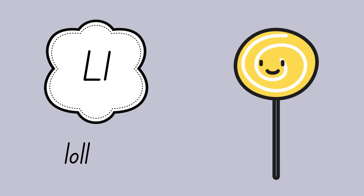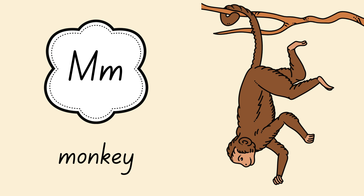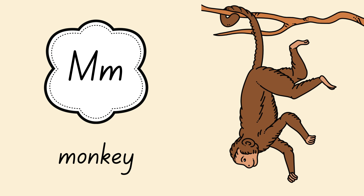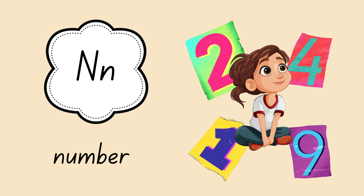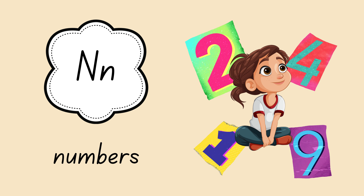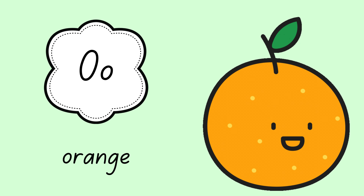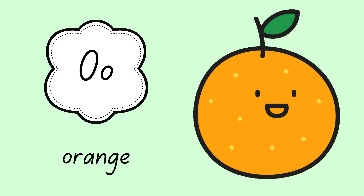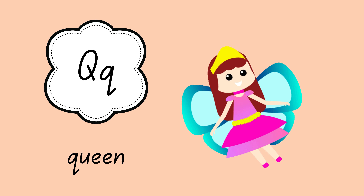L for lollipop. M for monkey. N for numbers. O for orange. P for popcorn. Q for queen.